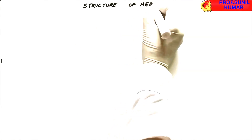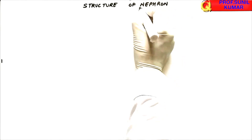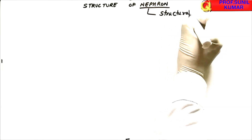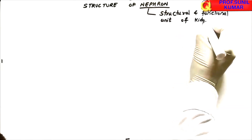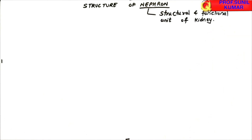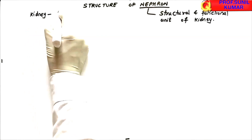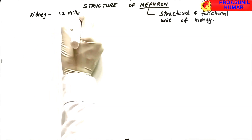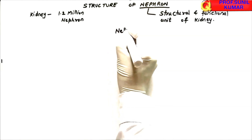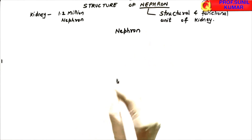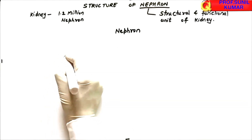Hello friends, I am back today with a new video on the structure of the nephron. The nephron is the structural and functional unit of the kidney. There are 1.2 million nephrons present in each kidney. Now let's understand how to draw the structure of the nephron.